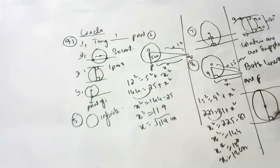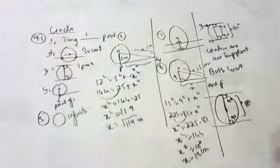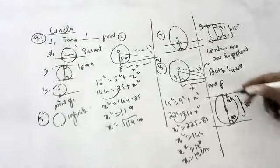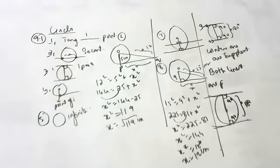Radius to tangent, this is radius to tangent — 90 degrees. 90 plus 90 is 180, so the angles are supplementary. Therefore, we can say these two tangents are parallel to each other. Okay children, I hope you understand.